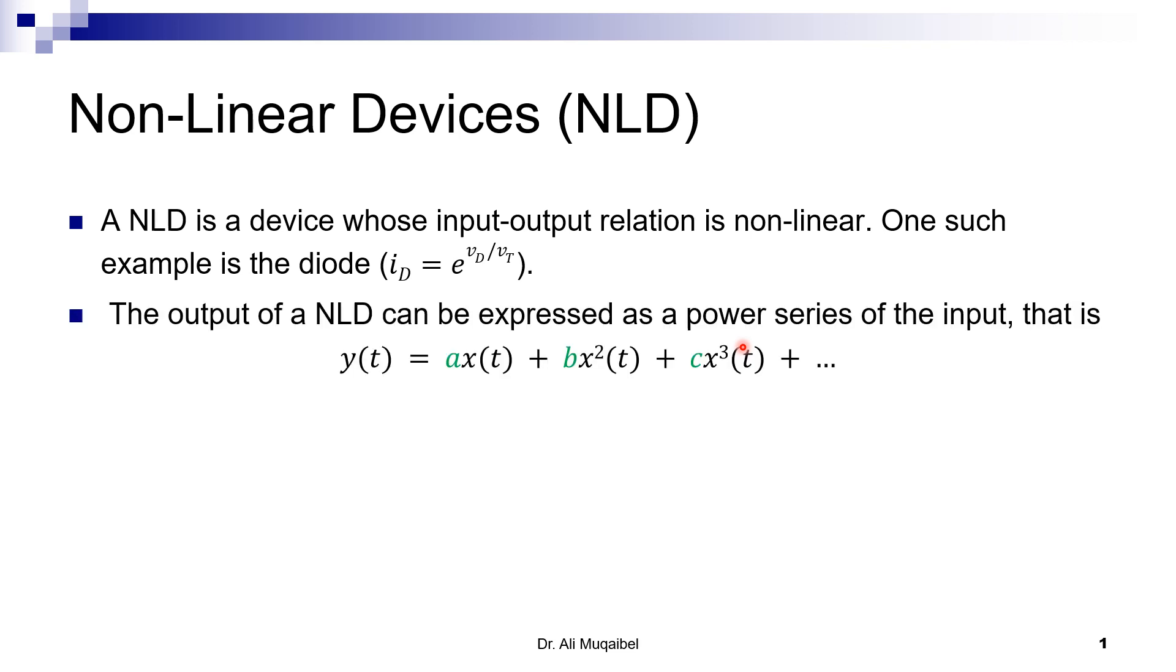a non-linear relation can be expressed in a power series format. So the relation between input and output, voltage and current Y and X, instead of writing it in exponential form, we can write the output Y = aX(t) + bX²(t) + cX³(t) + ... This is called the power series expansion. What makes this non-linear is